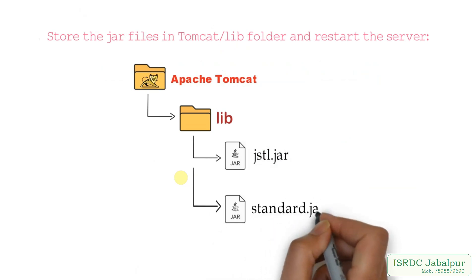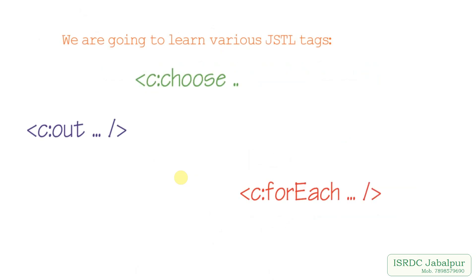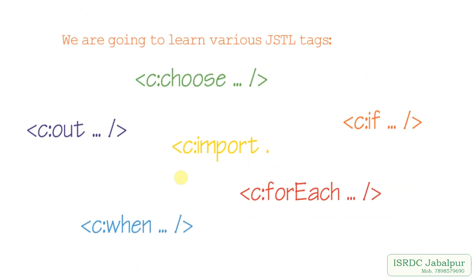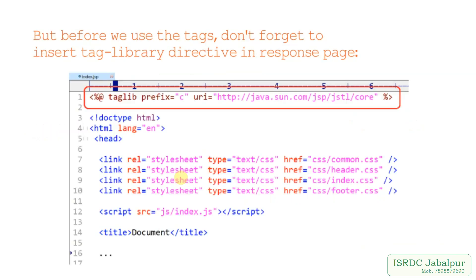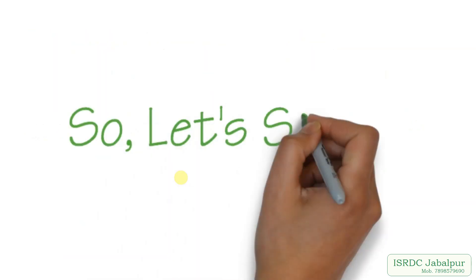In JSTL we are going to learn various tags like c:out, c:forEach, c:choose, c:if, c:when, c:import, etc. But before we use the tags, don't forget to insert the tag library directive in the JSP page. So let's start.